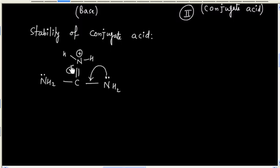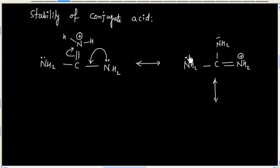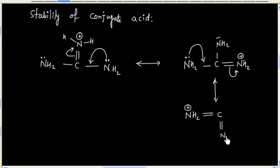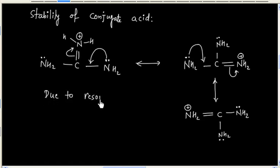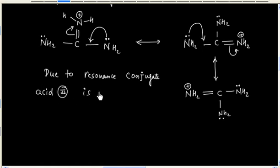We can write resonating structures for conjugate acid 2. This is one resonating structure. We can also write another resonating structure — this lone pair goes here and this bond goes here. We will have 3 resonating structures in this case. Due to resonance, conjugate acid 2 is very stable.